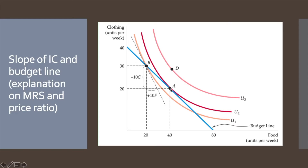Point A is the point of tangency between indifference curve U2 and the budget line. In geometry, the tangent line to a curve at a given point is the straight line that just touches the curve at that point. At a tangent point, the slopes of the budget line and indifference curve are equal — so at point A, the slope of the budget line is exactly equal to the slope of the indifference curve.